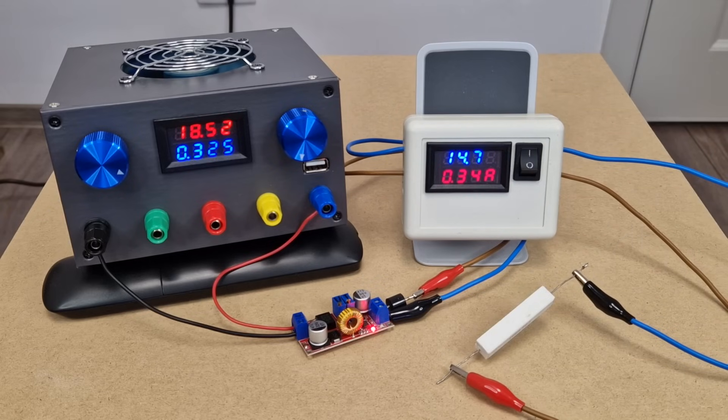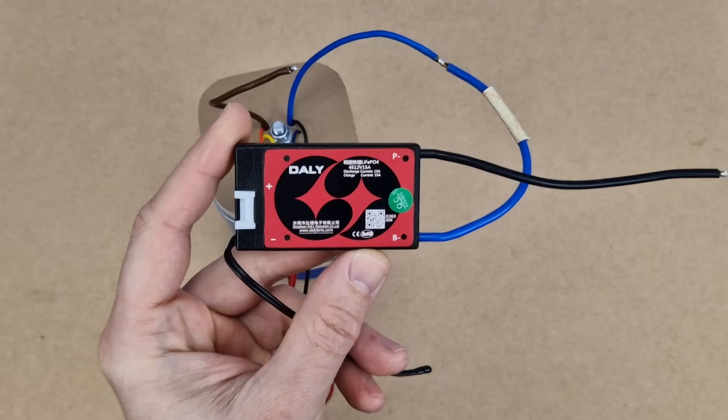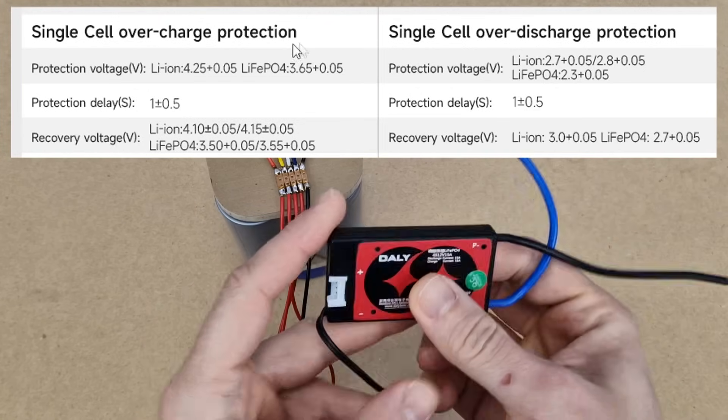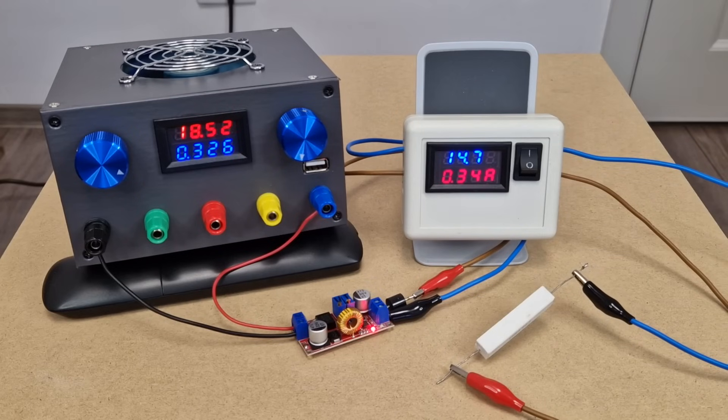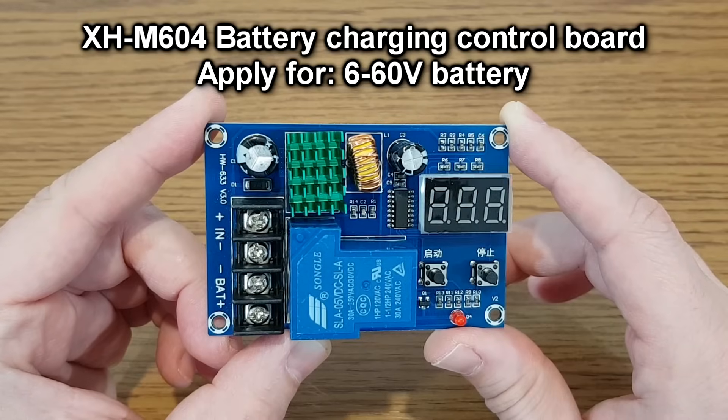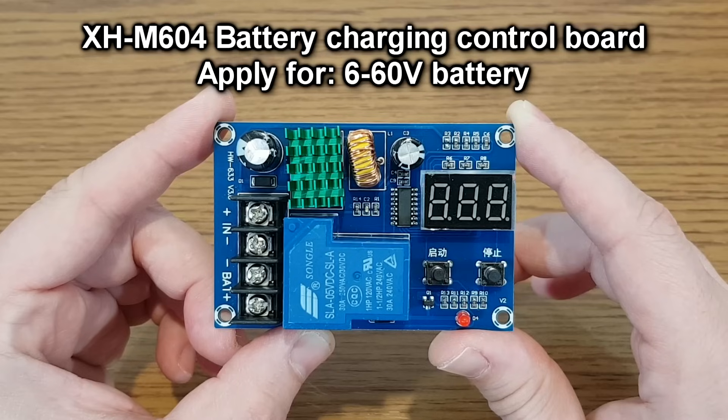14.7V is a bit high for a 4S lithium iron phosphate battery. That's because the overcharge protection voltage of this DALY BMS can go as high as 3.65V or even 3.7V per cell. I will leave it as it is for my small and cheap battery. If you want a lower cutoff voltage, you can use a programmable BMS board, which is expensive, or you can add a charging control module like this, between the charging converter and BMS.